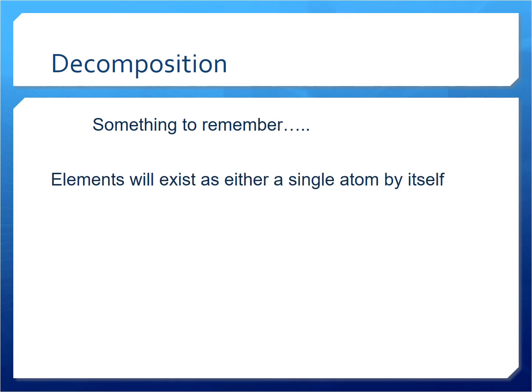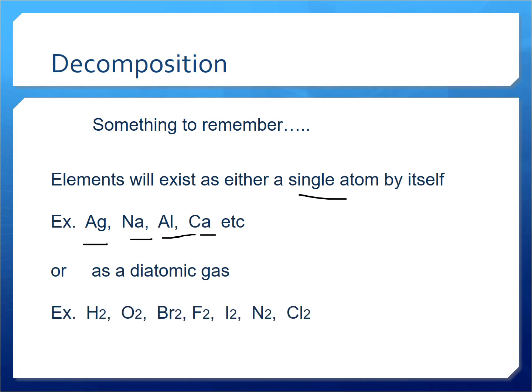Now something we need to remember here is that elements are going to exist as a single atom by themselves, such as these examples here, and all these are metals, or as a diatomic gas, the Hober-Finkle gases.